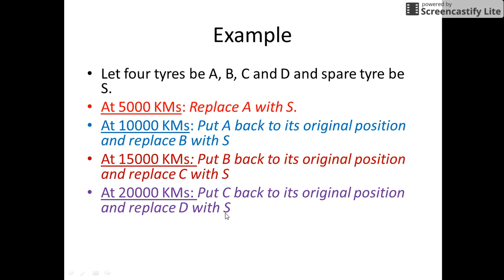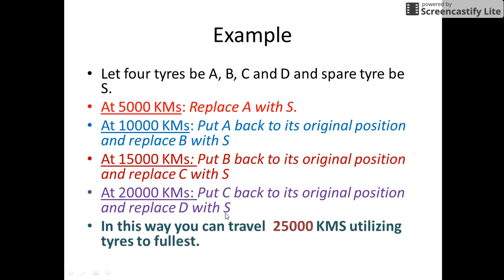So it means the car can go 5,000 more kilometers using the tires A, B, C and S. So in this way, you can travel 25,000 kilometers utilizing each of the tires to their fullest strength.